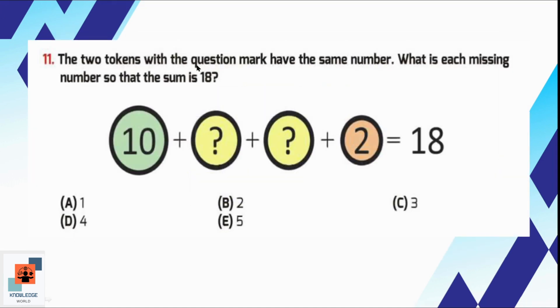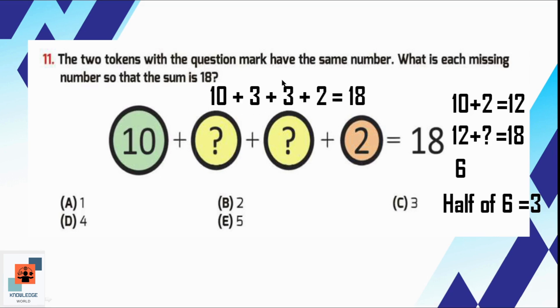Question number 11, the two tokens with the question mark have the same number. What is each missing number so that the sum is 18? First of all we are going to add the given numbers. 10 plus 2 is equal to 12. Now we will see that 12 plus what is equal to 18? 12 plus 6 is equal to 18. Now we have to find out the half of 6 because there are two circles which have missing values. So half of 6 is 3. The value will be 10 plus 3 plus 3 plus 2, that is equal to 18. So option C is the correct option. The missing value of each question mark is 3.